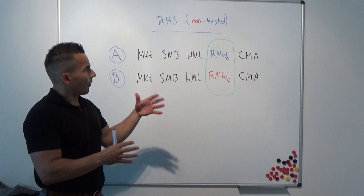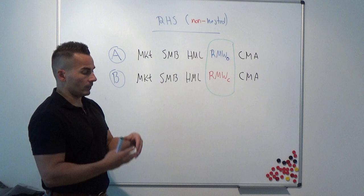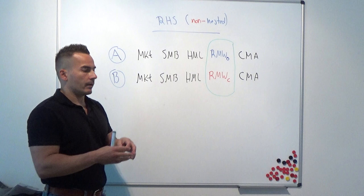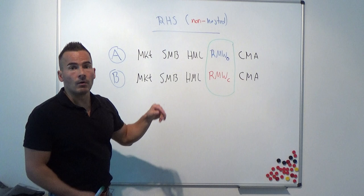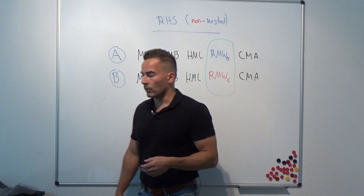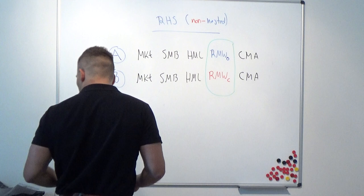For nested models, we either run a simultaneous equation model using the SUR technique or, if there is just one additional risk factor, use a t-test. When the test statistic indicates significant intercept terms, we know it increases the mean-variance frontier. But for non-nested models, the question is how we choose between these two models.